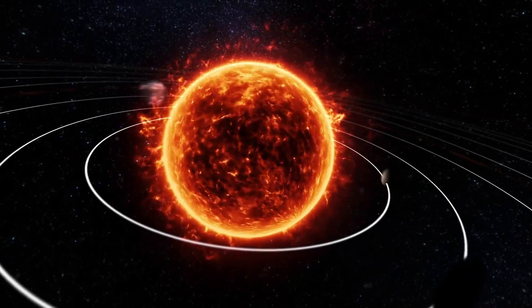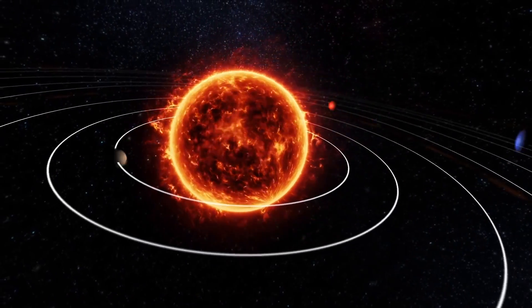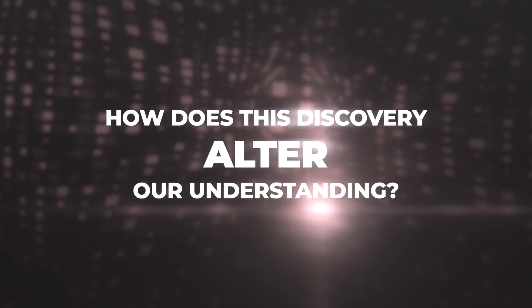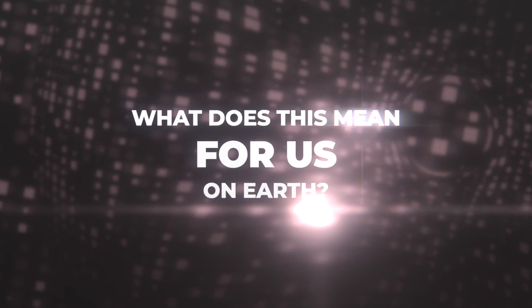What if the black holes are not really what we think they are? What if Einstein's theory of general relativity that worked so well in the solar system was not exactly right? How do these black holes differ from the ones we've studied before? How does this discovery alter our understanding of black holes? And what does this mean for us on Earth?